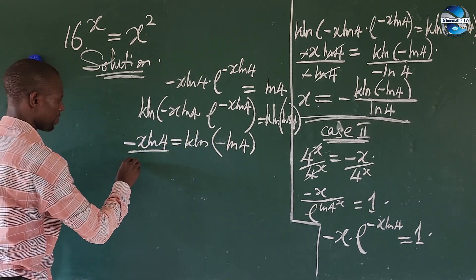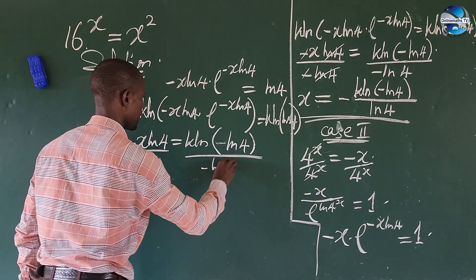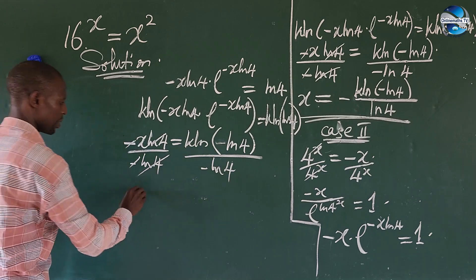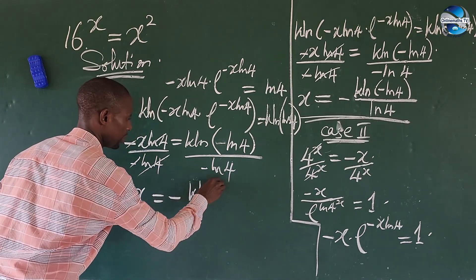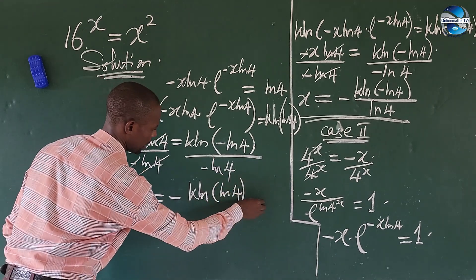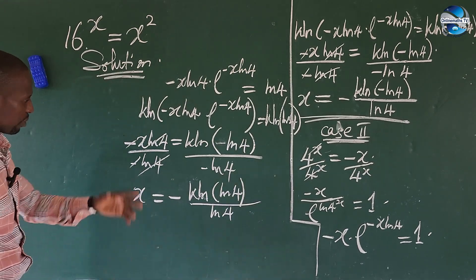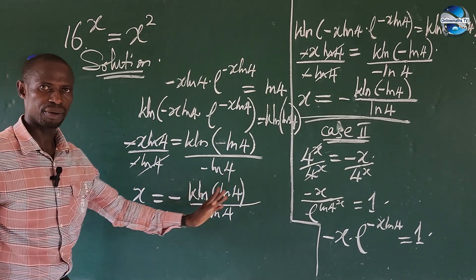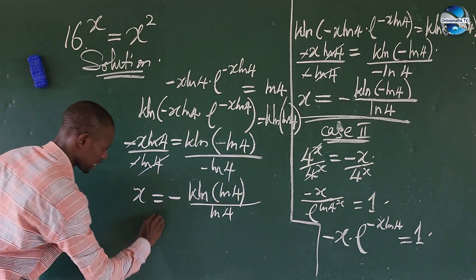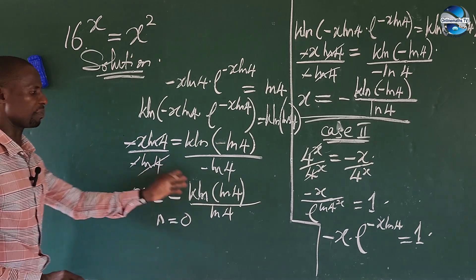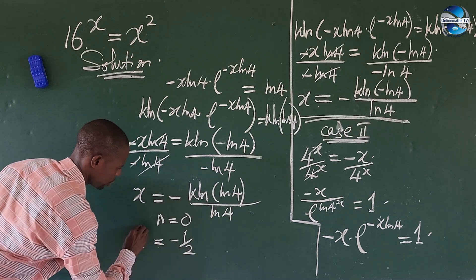We divide both sides by minus ln(4), and equally divide the right side by minus ln(4). This leaves us with x equal to minus W_n bracket ln(4), all over ln(4). As we said, n ranges from 0 to infinity. If we take n equal to 0 and substitute into a mathematical calculator, it gives us x equal to minus 1 over 2. This is the only real root to this challenge.